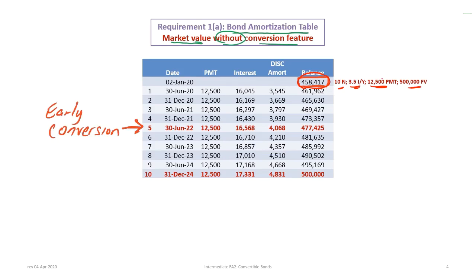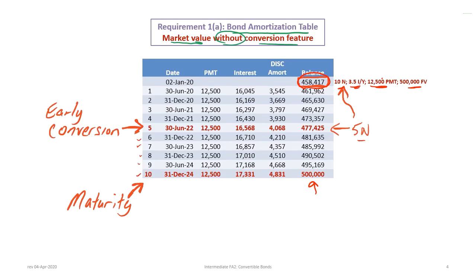A couple of other things to note: there is a line in red at payment 5, which reflects the early conversion. You should be able to prove the value at the point of early conversion by changing the number of periods in your calculator. Because there are 5 periods left, you change to 5N and you'll get $477,425. And at maturity, of course, the value of the bonds should be $500,000 in a completed amortization table.